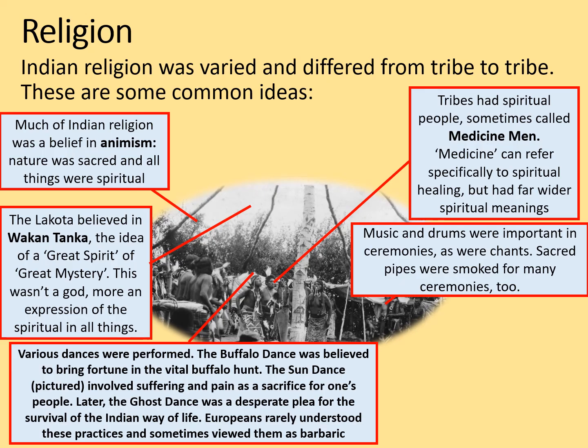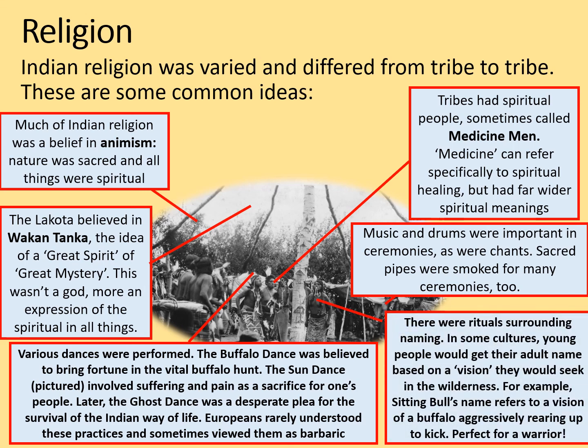Various dances were performed. The buffalo dance was believed to bring fortune in the vital buffalo hunt. The sun dance involved suffering and pain as a sacrifice for one's people. Later, the ghost dance was a desperate plea for the survival of the Indian way of life. Europeans rarely understood these practices and sometimes viewed them as barbaric. Lastly, there were rituals surrounding naming. In some cultures, young people would get their adult name based on a vision that they would seek in the wilderness. For example, Sitting Bull's name refers to a vision of a buffalo aggressively rearing up to kick — perfect for a warrior.